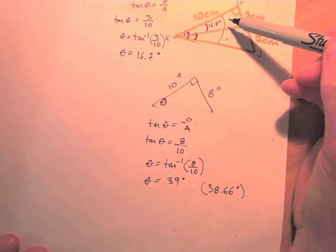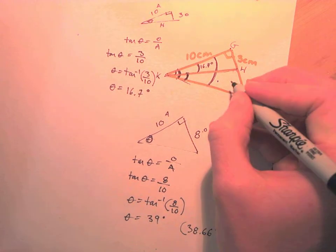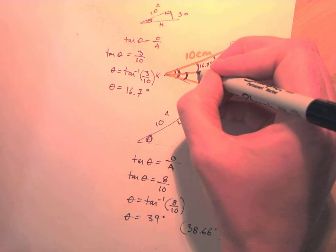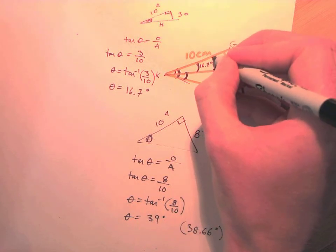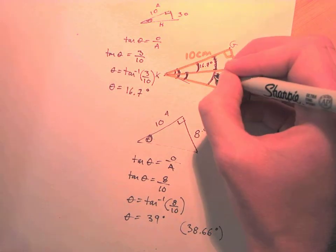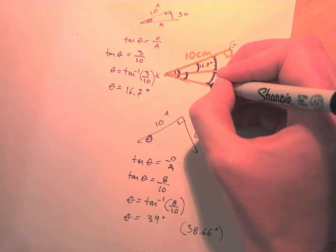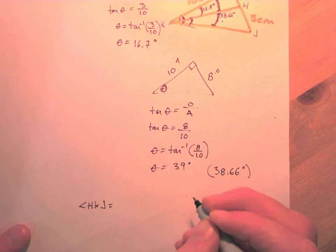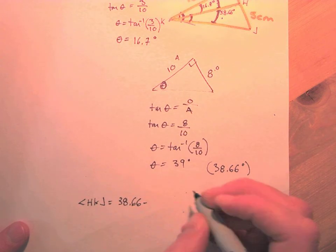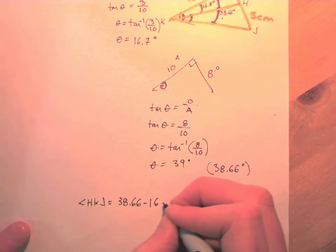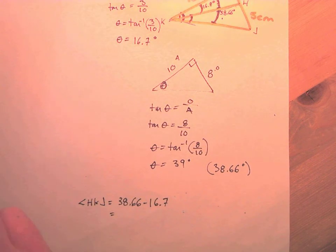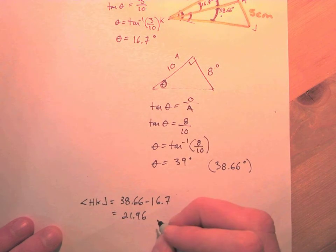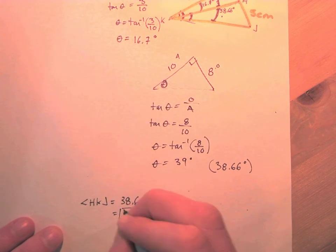Now we have the big angle of 38.66 degrees and the small angle of 16.7 degrees. Subtracting: angle HKJ = 38.66 − 16.7 = 21.96 degrees. That is the answer — and that is a tough question.